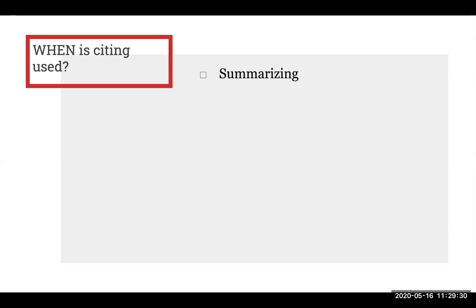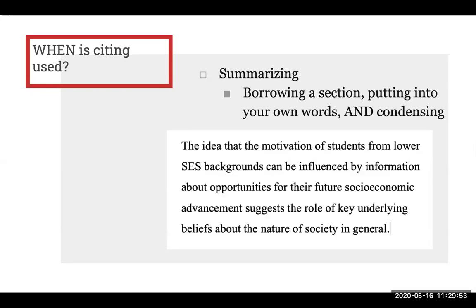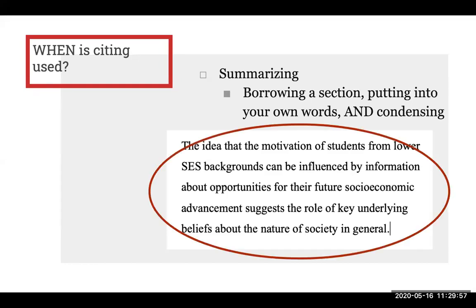Citations should also be used when you are summarizing. Summarizing is when you take someone else's work, put it into your own words, and condense it into a summary. Similar to paraphrasing, even though you are not quoting a source word for word, it is still borrowing someone else's idea, and therefore it needs a citation. Let's say you want to borrow a whole paragraph, rewrite it into your own words, and condense the idea into a much smaller statement. Summarizing requires citing the source of where you borrowed the idea from.